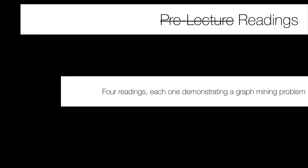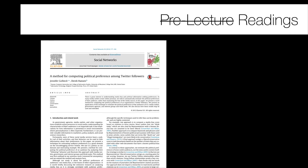As with other modules, I've provided a set of readings. You don't need to read them prior to the lecture, but they'll be useful. The four readings each offer insight into different kinds of graph mining techniques and problems. The first is a method for computing political preference among Twitter followers — an example of inferring node attributes.